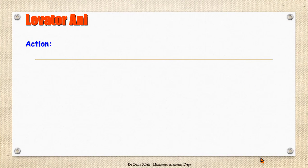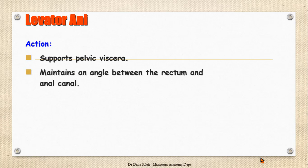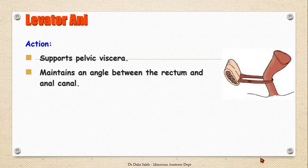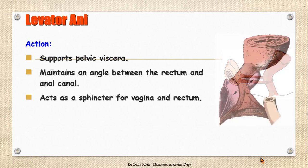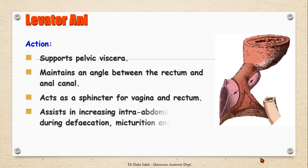For the action of the levator ani: because this muscle contains both type 1 and type 2 skeletal muscle fibers, it supports the pelvic viscera in their position by continuous tonic contraction. It also maintains the anorectal angle between the rectum and the anal canal by tonic contraction, relaxing only during defecation. It acts as a sphincter for the vagina and rectum, and it can contract suddenly, helping maintain continence of urine and feces during sudden increases in pressure such as sneezing or coughing. Its contraction also assists in increasing intra-abdominal pressure during defecation, micturition, and delivery.